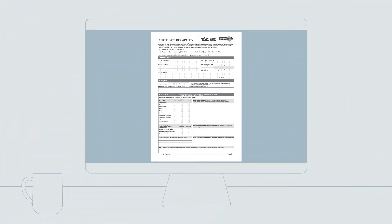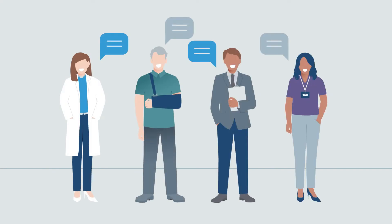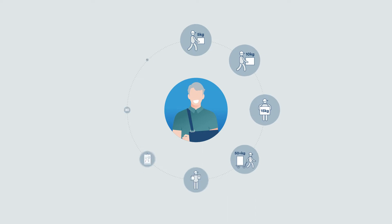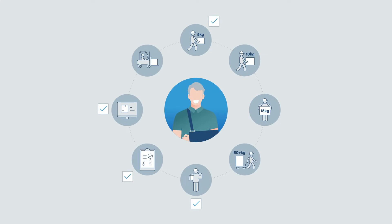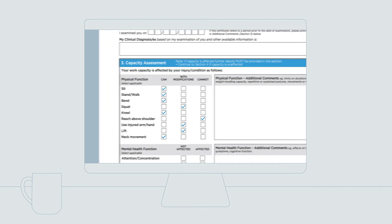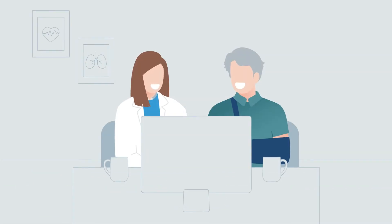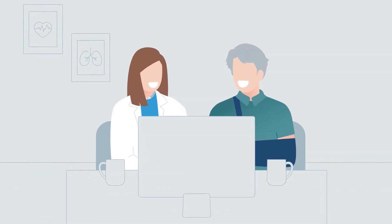The Certificate of Capacity is an essential tool for communicating with your patient, their employer and the TAC about your patient's capacity to work after an accident. Use Section 3 Capacity Assessment to provide details on what your patient can and can't do, and what they can do with modifications. This gives guidance to your patient and their employer.